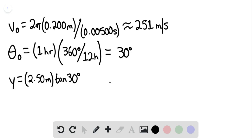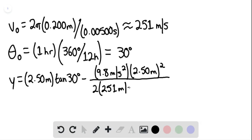This is using equation 425, and this would be minus 9.8 meters per second squared multiplied by 2.50 meters quantity squared divided by 2 multiplied by 251 meters per second quantity squared multiplied by cosine of 30 degrees quantity squared. And we find that this is approximately equal to 1.44 meters.